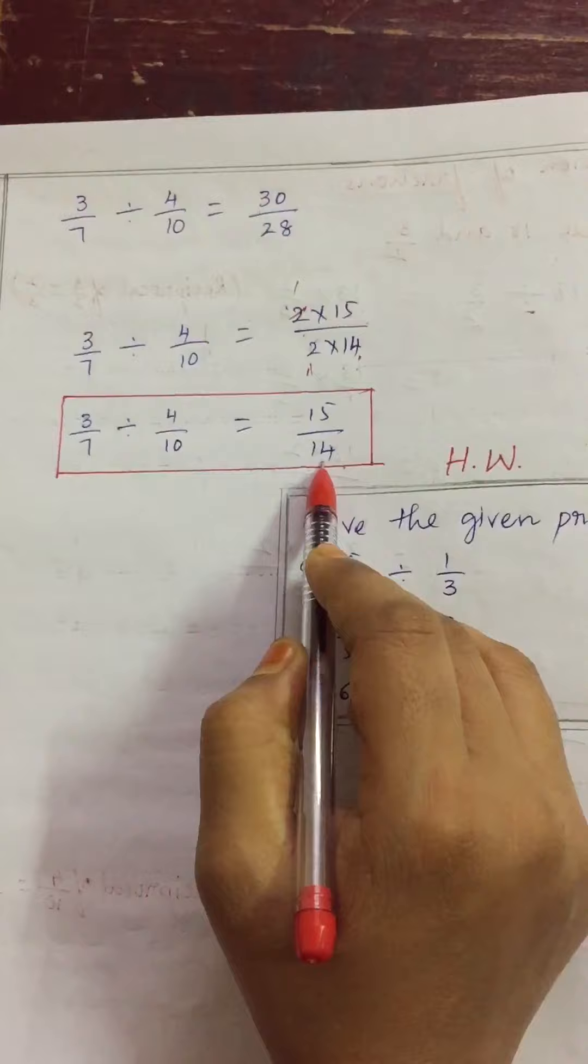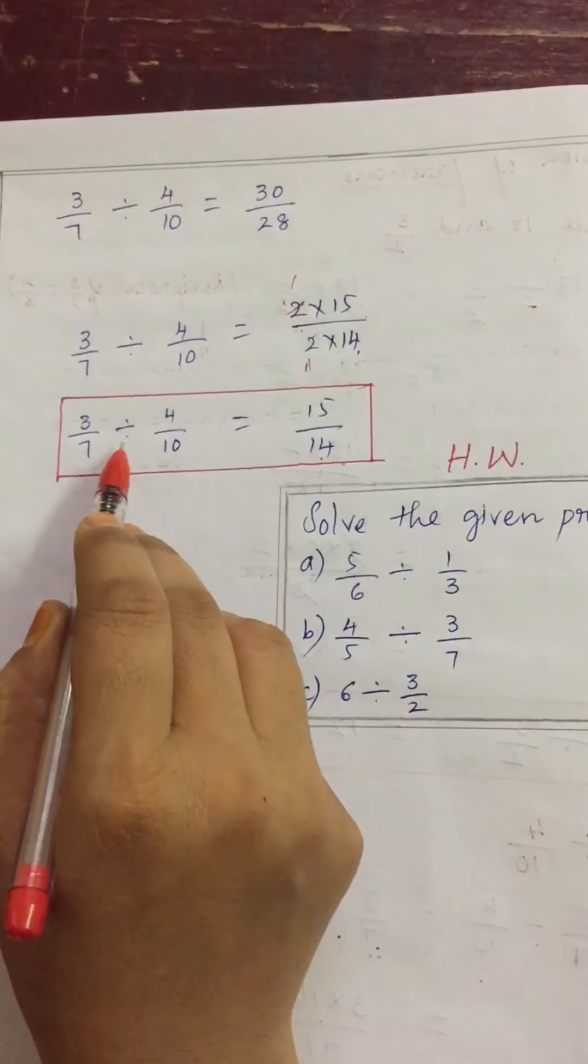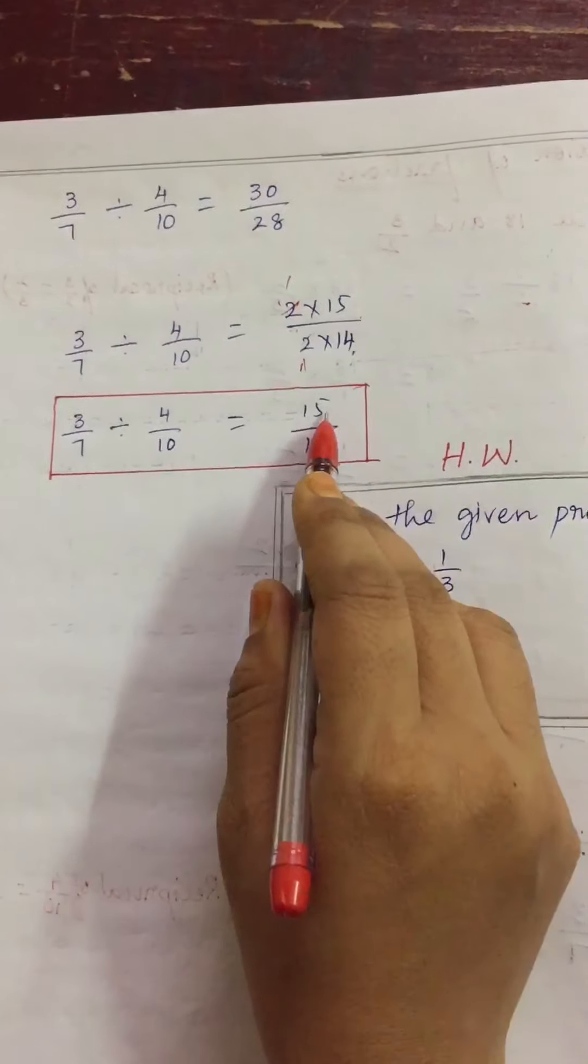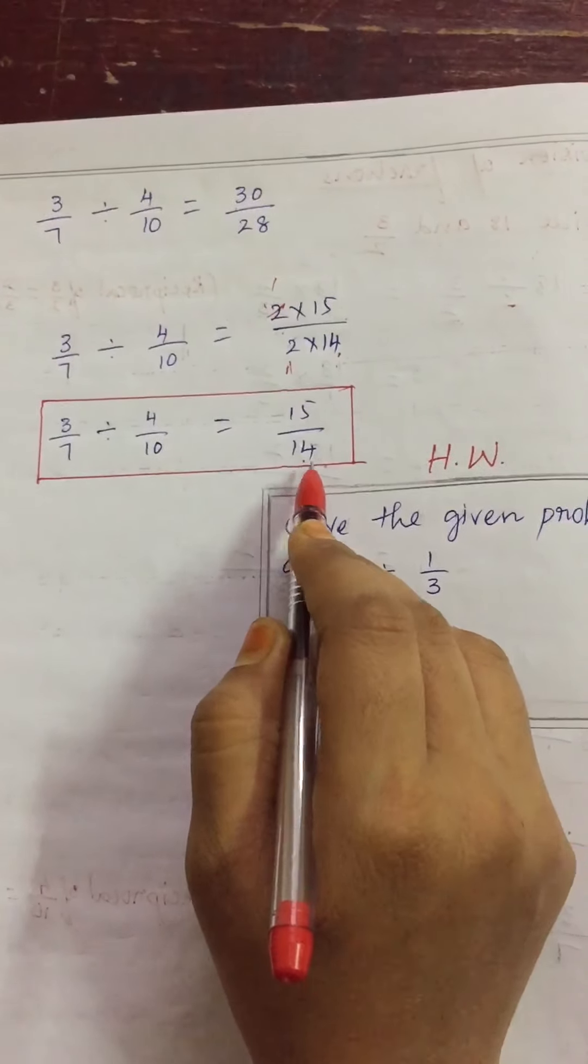So, 15 by 14 is our answer. When we divide 3 by 7 with 4 by 10 answer is 15 by 14. Am I clear children?